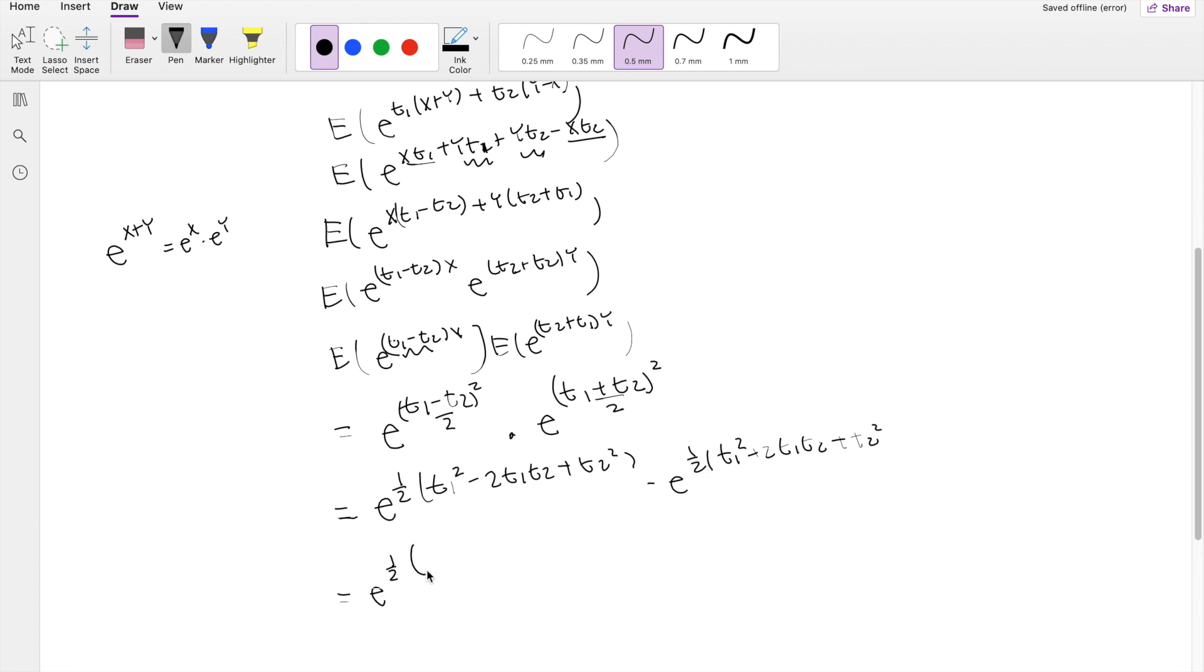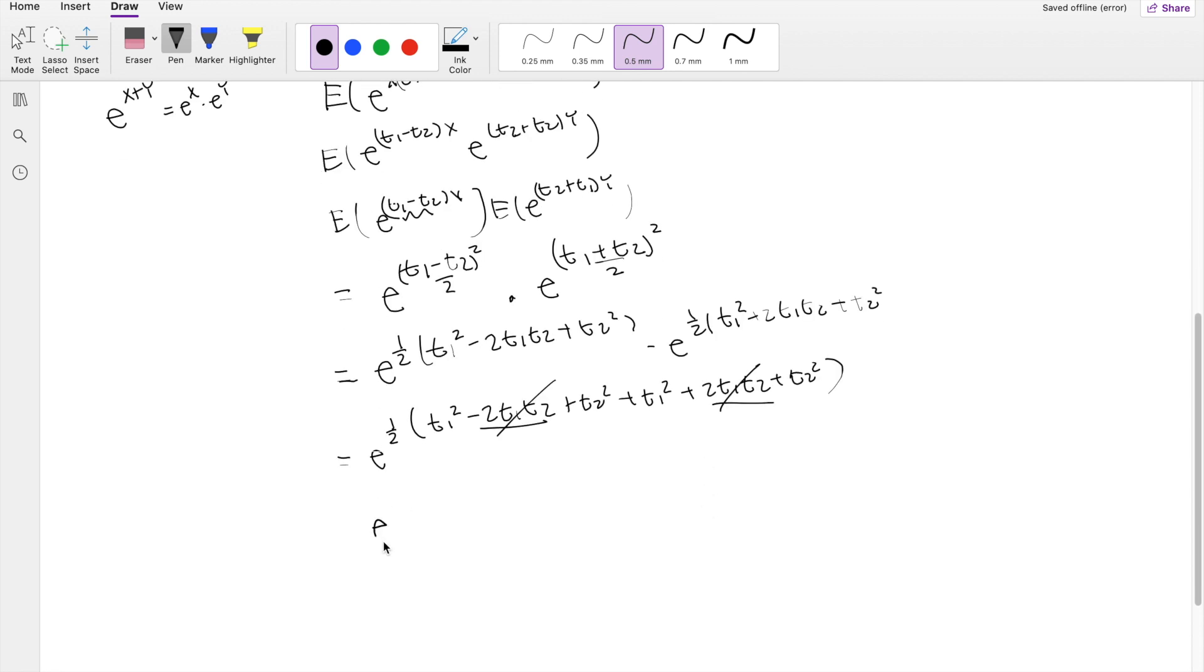So you get E to the one half. All of these terms have a half, so we can actually factor the half out. And you get T1 squared minus 2T1T2 plus T2 squared plus T1 squared plus 2T1T2 plus T2 squared. But you can see that these two terms here are going to cancel out.